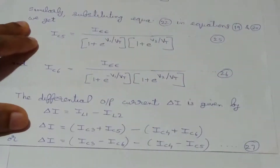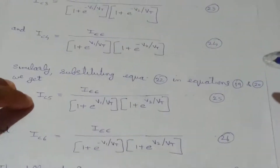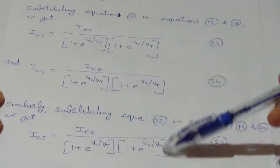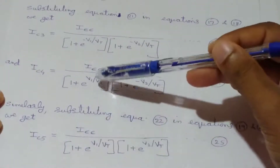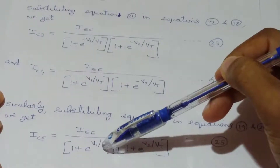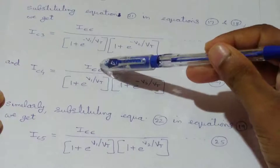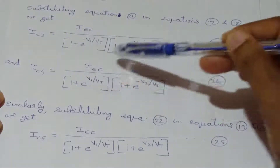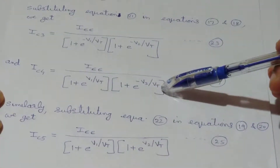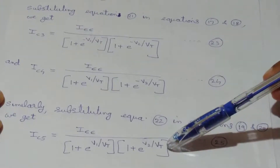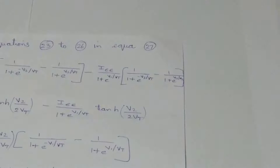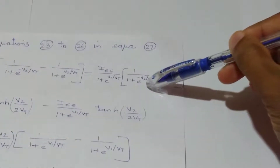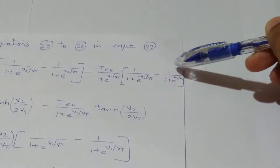For the second term IC4 minus IC5, the factor IEE divided by (1 + e raised to V1 over Vt) is common, giving IEE over (1 + e to V1 over Vt) times [1 over (1 + e to minus V2 over Vt) minus 1 over (1 + e to V2 over Vt)].